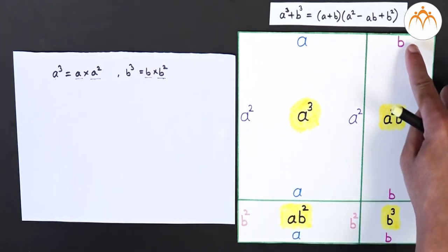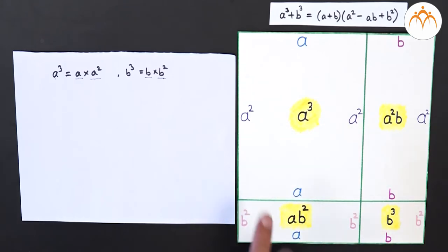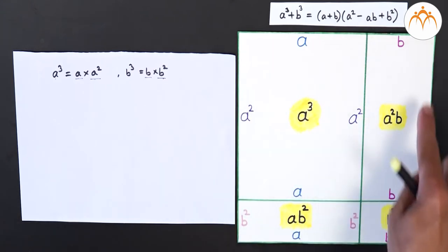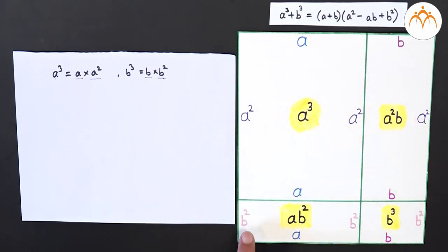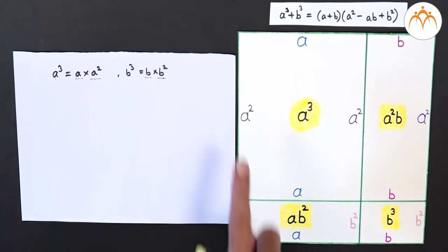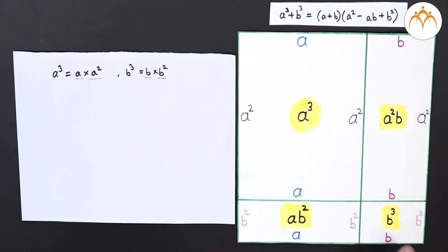Similarly, here we have b and this length is b squared, so the area of this piece is b into b squared which equals b cube. Now we are interested in a cube plus b cube, that is the sum of these two areas. But there is one big rectangle whose sides are a plus b and a squared plus b squared.